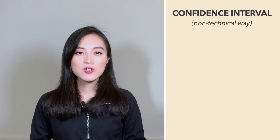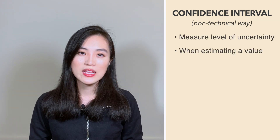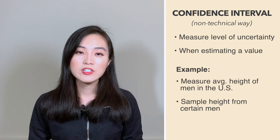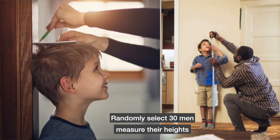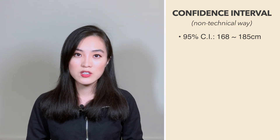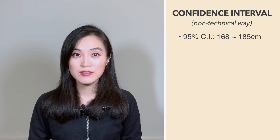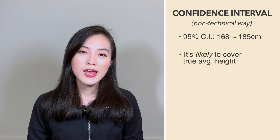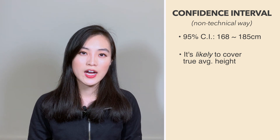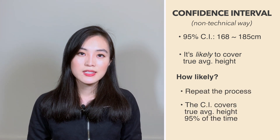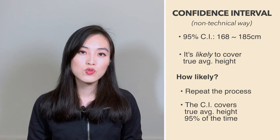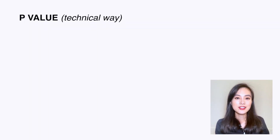Now let's explain confidence interval to a non-technical person. Confidence interval measures the level of uncertainty when we try to estimate a value. For example, we want to know the average height of men in the U.S. We randomly select 30 men and measure their heights and get a 95% confidence interval of, say, 168 to 185 centimeters. This means it is likely to cover the true average height of all men in the U.S. If we repeat the process over and over again, we expect the confidence interval we construct to cover the true value 95% of the time.